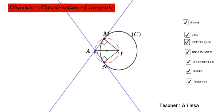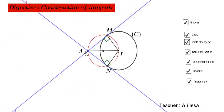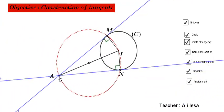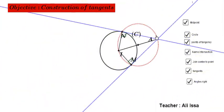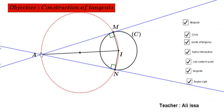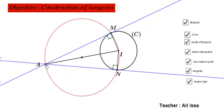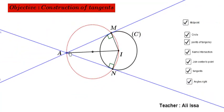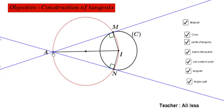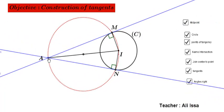But, in all cases, as you see in the figure, whenever I change the position of A, we still have two tangents to the circle C. And the construction of these two tangents are done by these steps.